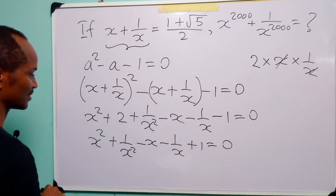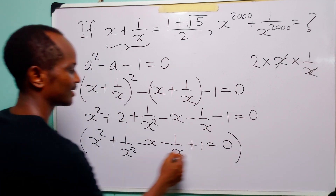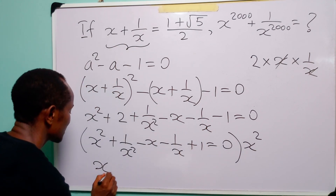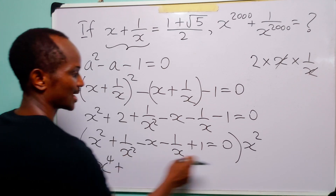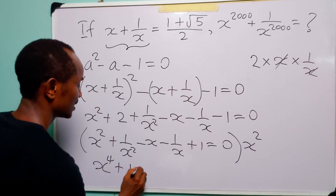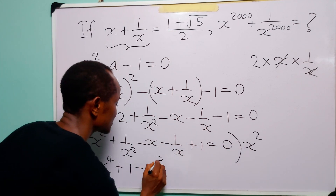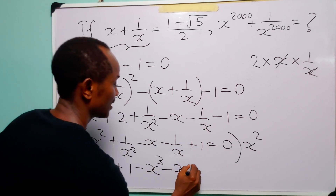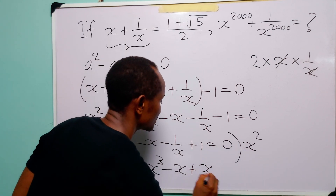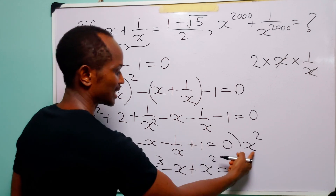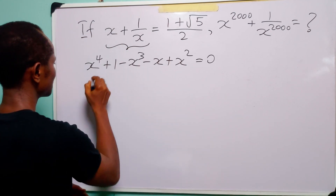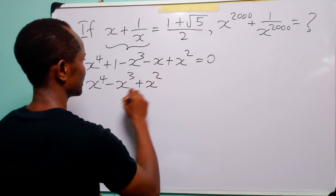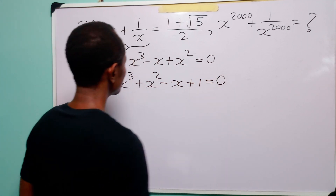So we have x squared plus 2 plus 1 over x squared minus x minus 1 over x minus 1 equals 0. Multiplying through this equation by x squared: x squared times x squared gives x to power 4, 1 over x squared times x squared gives 1, x times x squared gives x cubed, 1 over x times x squared gives x, and 1 times x squared gives x squared, all equal to 0. Rearranging, we have x to the power 4 minus x cubed plus x squared minus x plus 1 is equal to 0.